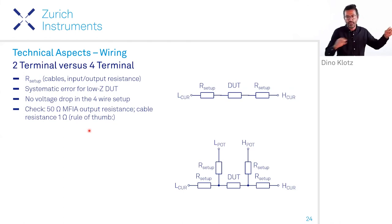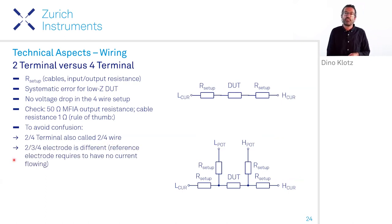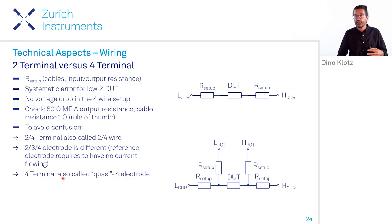And to avoid confusion with the two-terminal and four-terminal, there are different ways to express this. It's also called two- or four-wire. When we speak of two-, three-, four-electrode setup, it's a bit different. That comes mostly from liquid electrochemistry, where you have a dedicated reference electrode. So that is not what we're talking about here. We're just talking about four-terminals, which is also called sometimes quasi-four electrode measurement, because the actual connectors can be the same. You just measure in a different branch.